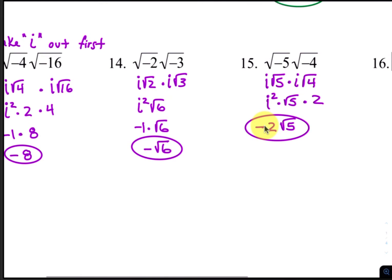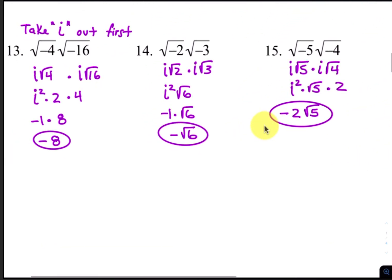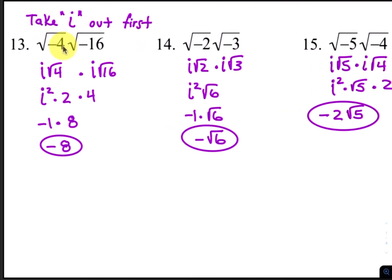For problems 13 through 16, you're multiplying these radicals. Because they have negatives inside, you have to take the i's out first. So the square root of negative 4 is i times the square root of 4, and the square root of negative 16 is i times the square root of 16. The square root of 4 is 2, and the square root of 16 is 4. This i times the other i is i squared, which becomes negative 1. And 2 times 4 makes 8, so your final answer is negative 8.